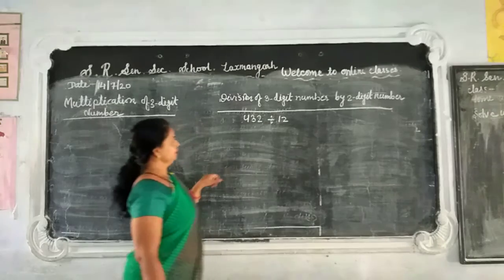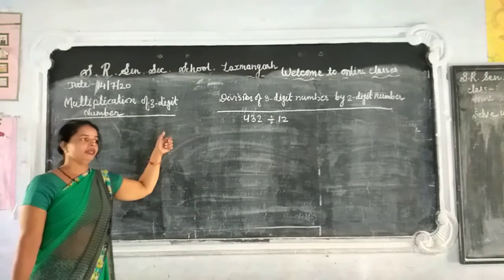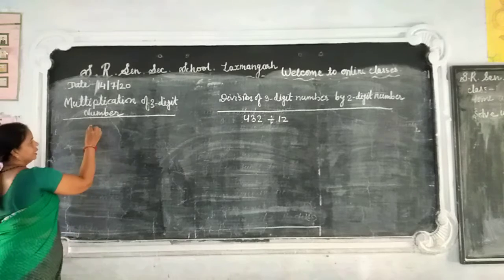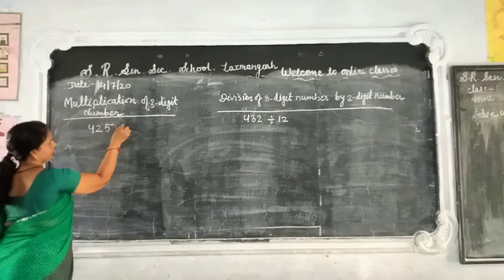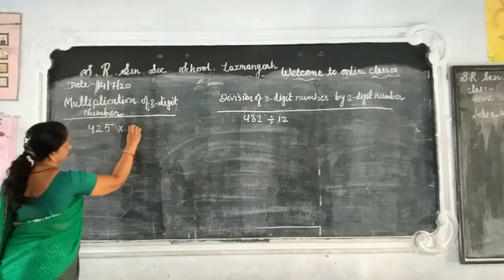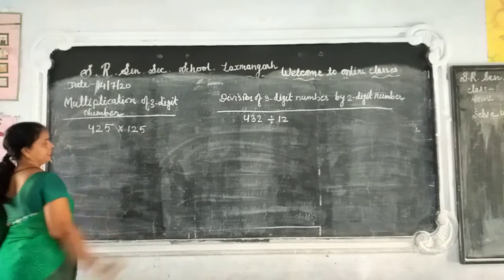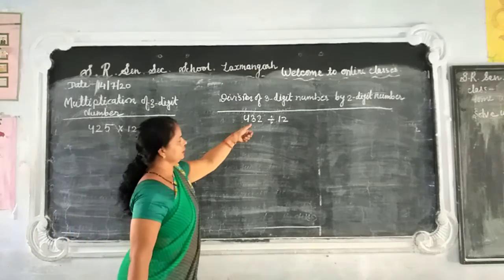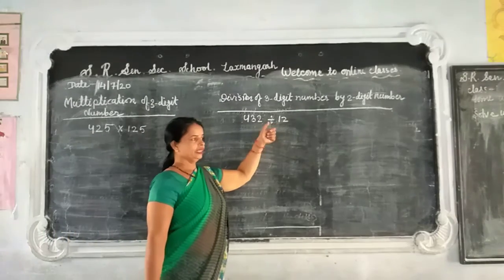It means multiplication of a 3-digit number — 425 multiplied by 125. And 432 divided by 12.